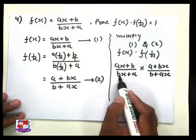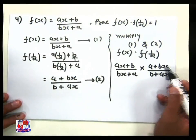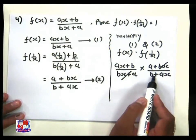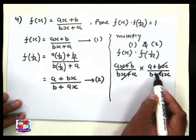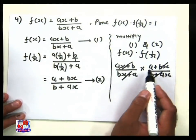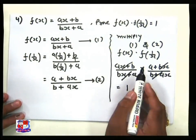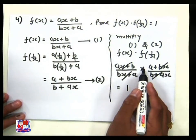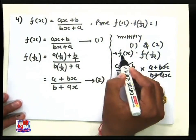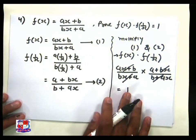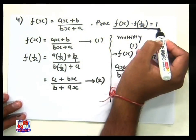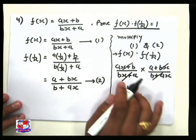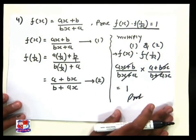Notice that (bx + a) and (a + bx) are the same, and (ax + b) and (b + ax) are the same — so both pairs cancel out. No value remains except the multiplication sign, so the result is 1. Hence we have proved f(x)·f(1/x) = 1. This completes the solution.